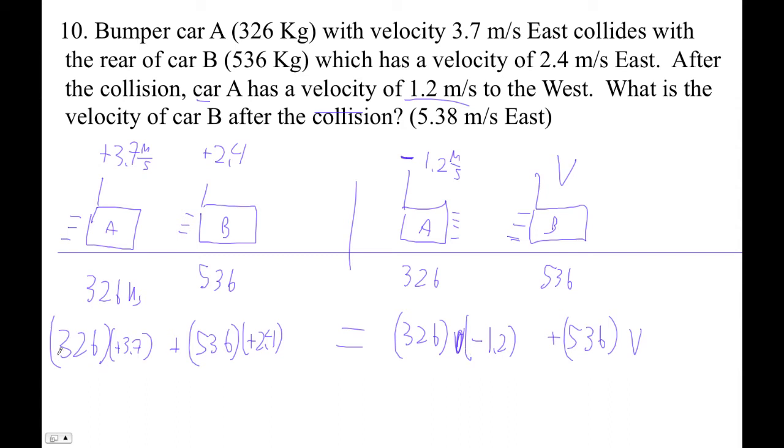Okay, so here's what we do. We go 326 times 3.7 plus 536 times 2.4. And then I'm going to add this guy too. I'm going to go plus 326 times 1.2. So bring it on the other side, I'm making it positive. And now I have everything that equals 536 V. So divide by 536. We have 5.38 meters per second.